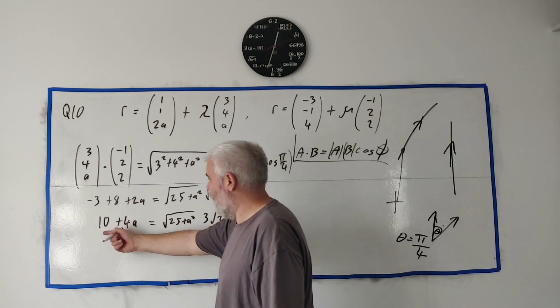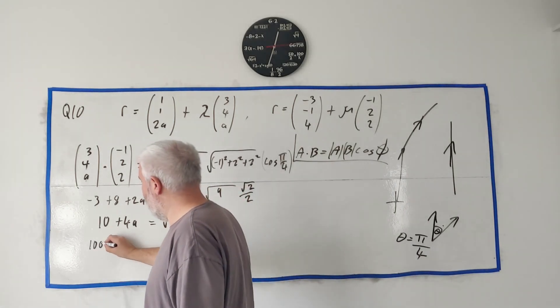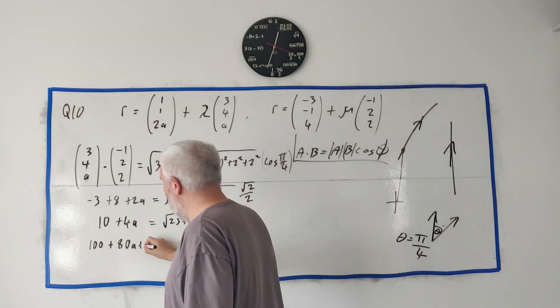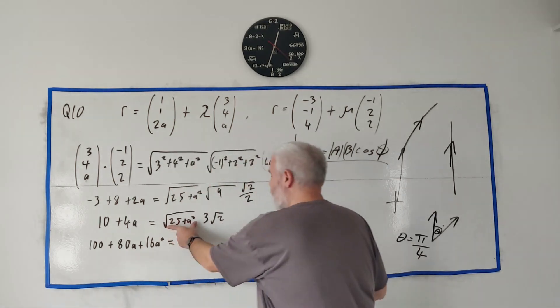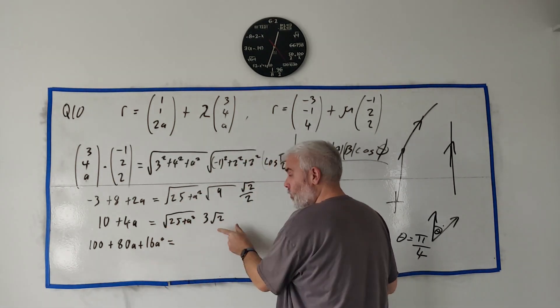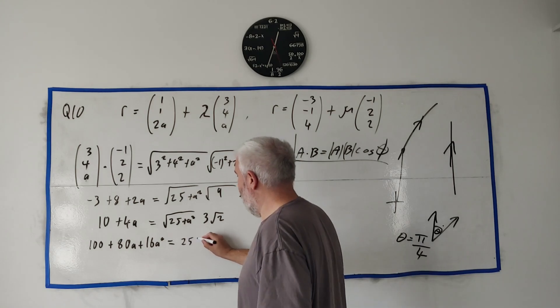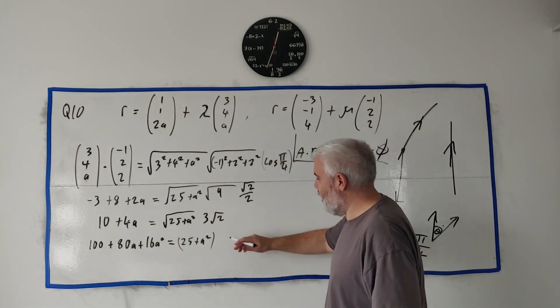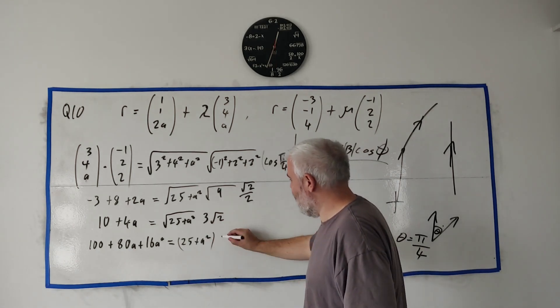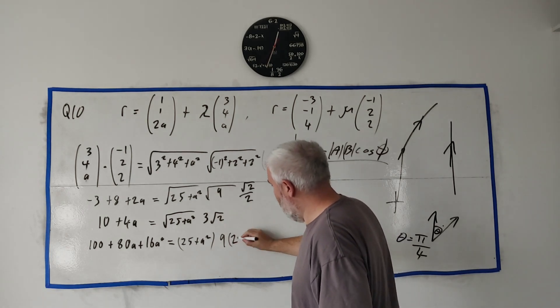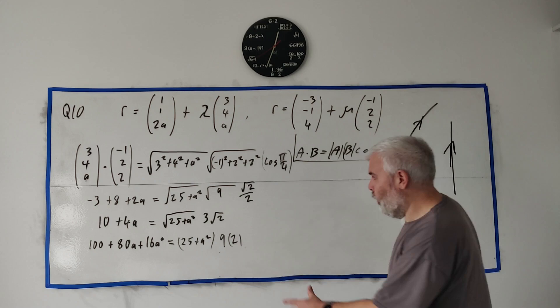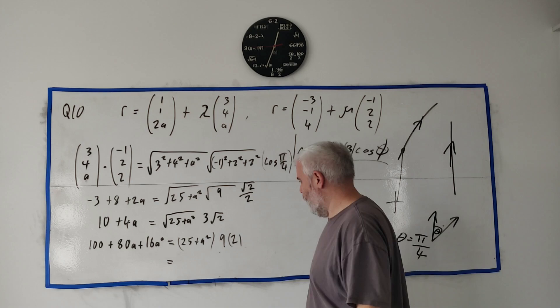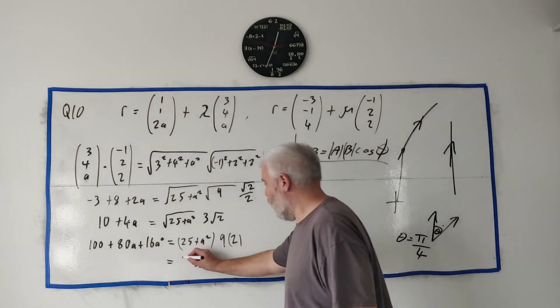Let's do that now: 18 × 25 is 450 plus 18a². Hopefully you can see we have a quadratic here.